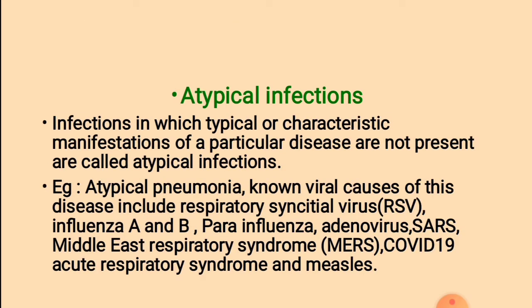2. Atypical infections: Infections in which the typical or characteristic manifestations of a particular disease are not present are called atypical infections. For example, atypical pneumonia — causes of this disease include respiratory syncytial virus, influenza A and B virus, parainfluenza virus, adenovirus, SARS, Middle East respiratory syndrome, COVID-19, acute respiratory syndrome, and measles.